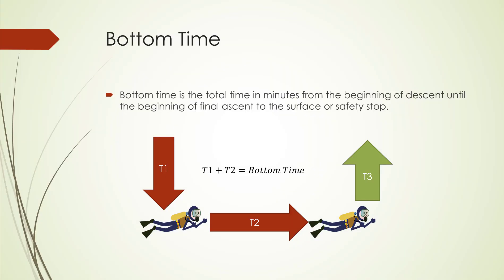Let's start with the definition of bottom time. Bottom time is the total time in minutes from the beginning of the descent until the beginning of the final ascent to the surface or safety stop. When you start your dive from the surface going down, that time is being counted, and then you swim around and do your dive until the point you decide to ascend. The ascent time, shown as T3, is not counted as part of your bottom time. Bottom time is T1 plus T2, and that's it.